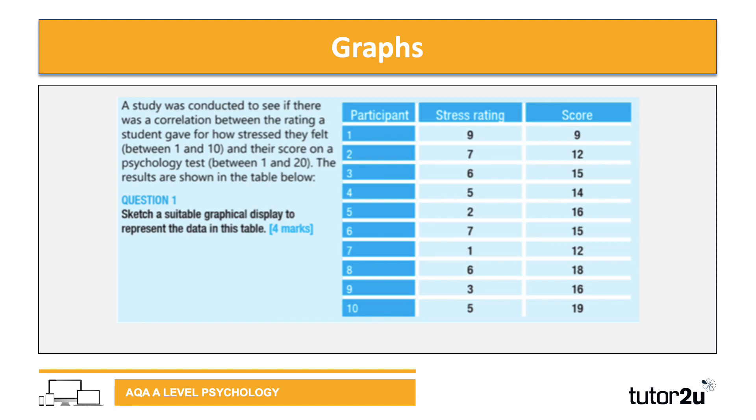Here we've got another stem with a table of findings. The question asks you to sketch a suitable graphical display to represent the data. Notice they haven't specified which graph - they've just said sketch a suitable graph. This is quite important as it's a common question. In your A-level psychology course, you'll cover when to use each graph for what type of data - bar charts, scatter graphs, histograms, for example. Pause the video if you wish and try to plot this on a graph you think is suitable, then we'll go through the answer.